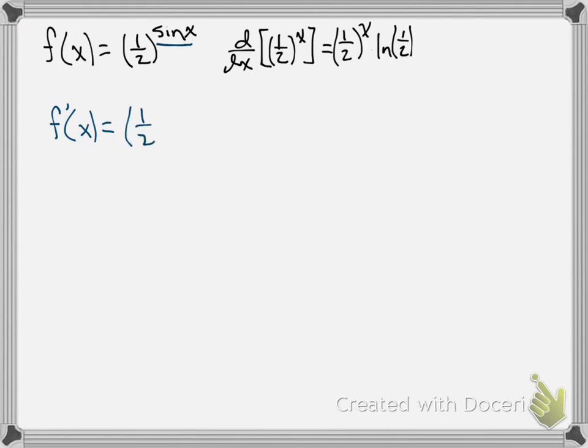So it's going to have, all exponentials have themselves in the derivative. So 1 half raised to the sine of x is going to be in there. We have to finish taking the derivative of the outside function. That comes from multiplying by the ln of 1 half.